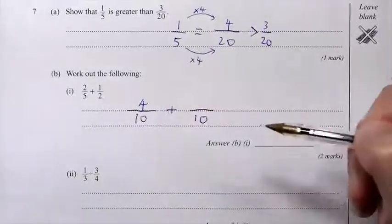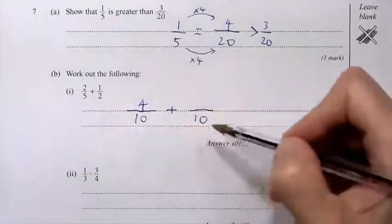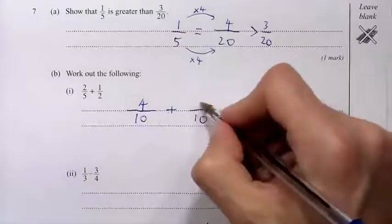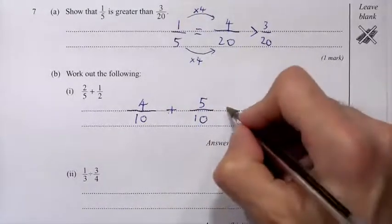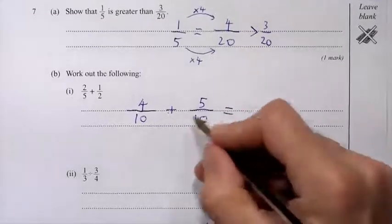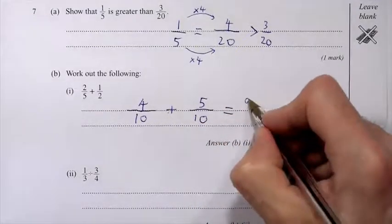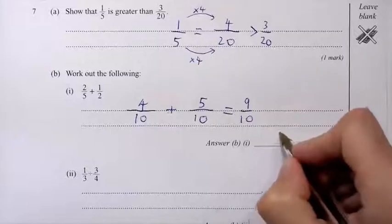And then 1 half is how many tenths? Well, to get from 2 to 10, you times by 5. Do the same thing to the top. 1 times 5 is 5. And now it's dead easy. Just add the tops. 4 tenths plus 5 tenths is 9 tenths. So that's our answer.